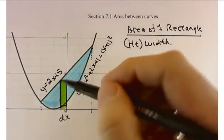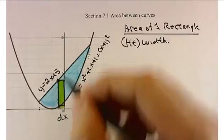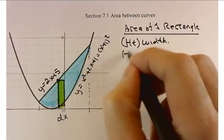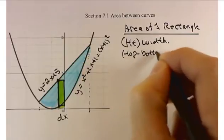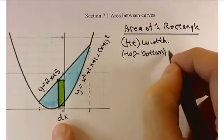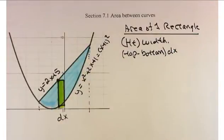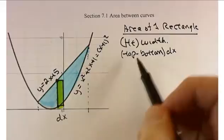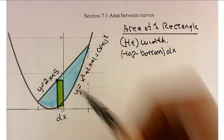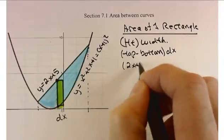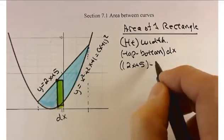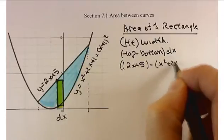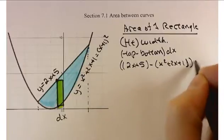The height is going to be the difference in the y coordinates — top minus bottom — times the width dx. I like having the differential there because it tells me that overall, when I finish finding this expression, it has to be in terms of x. So I need an expression for the top function in terms of x: that would be 2x plus 5, minus the bottom function which is x squared plus 2x plus 1, dx.